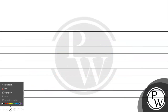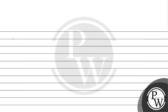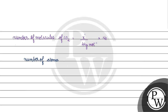Now we compare this with the number of atoms in carbon dioxide. First, we find the number of molecules of carbon dioxide. That will be x dash divided by the molar mass of 44 grams per mole, multiplied by Avogadro's number.